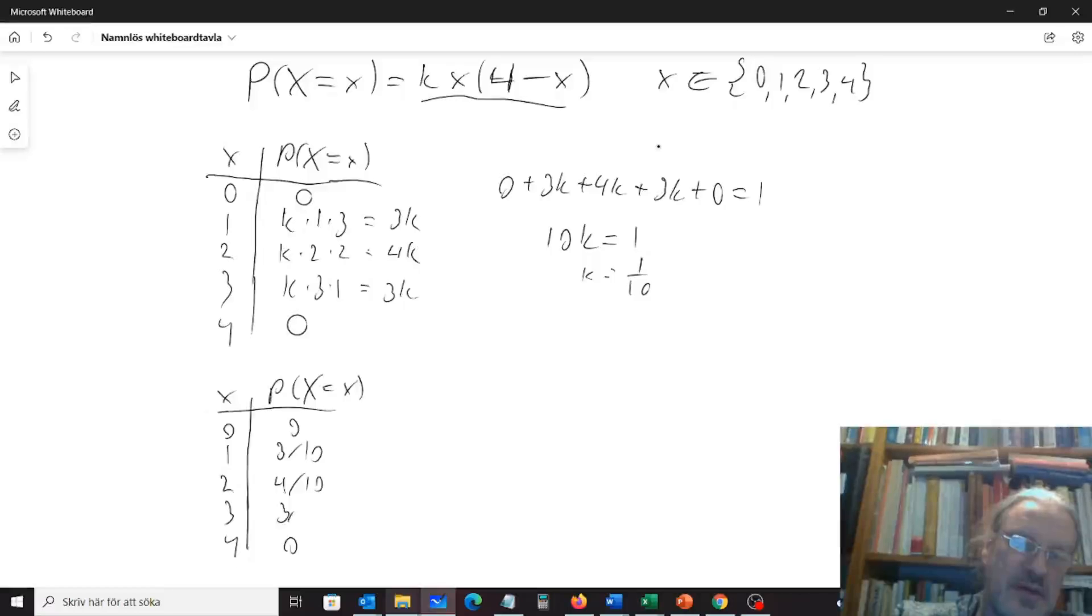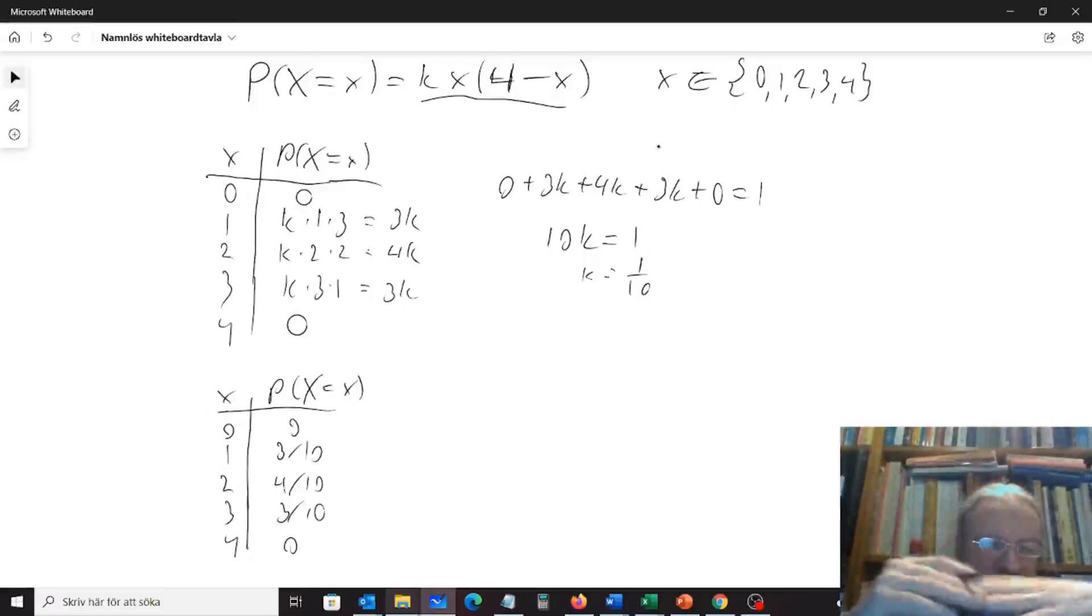And we can already see here that the expected average should be 2, because this is completely symmetric, you will as often get 1 as 3, 3 out of 10 times on average. So we already know the expected value or their theoretical average is 2.